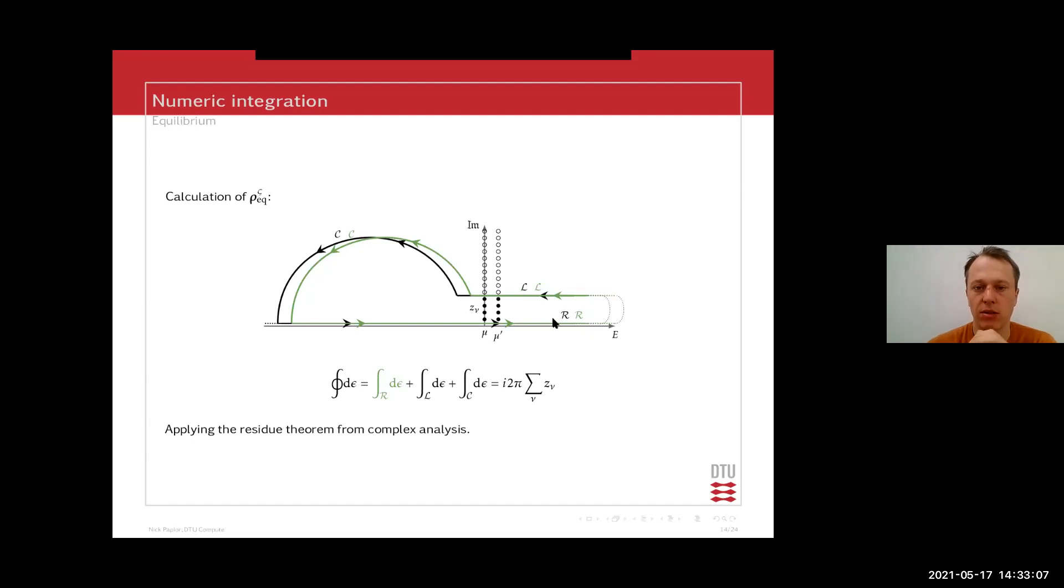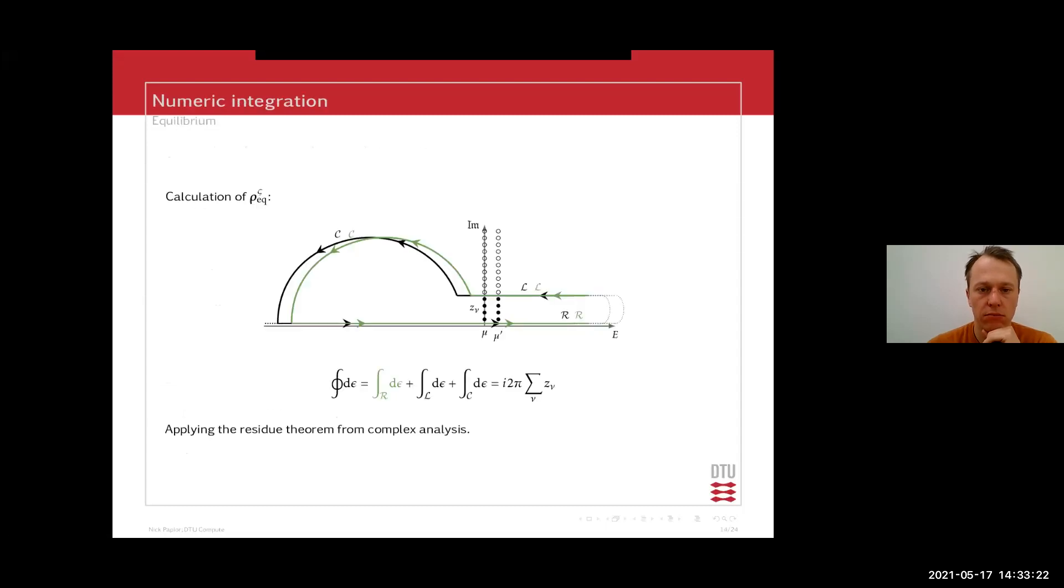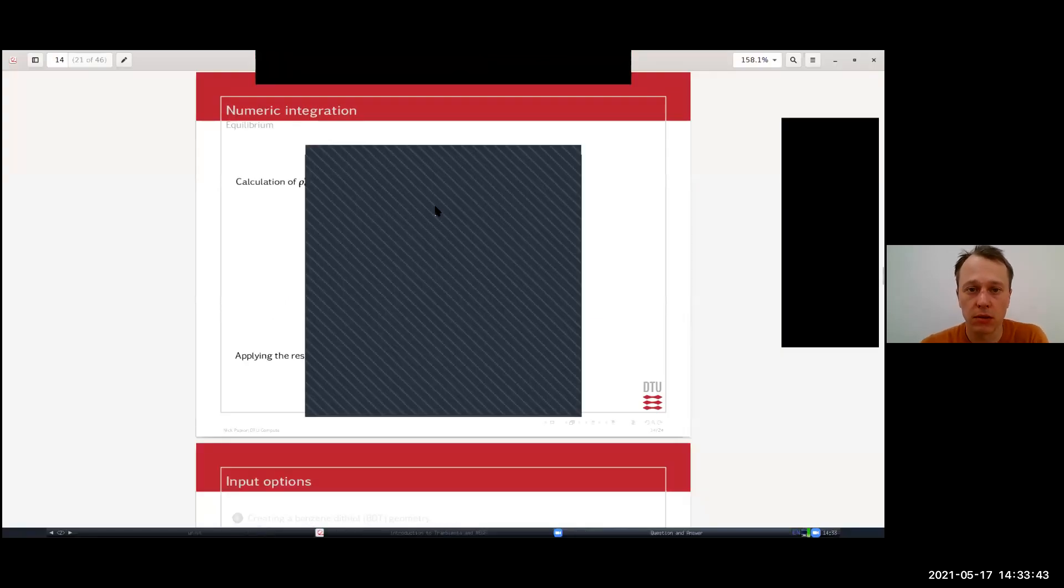So if you have two chemical potentials, you have to have two different contours and they are just shifted according to your chemical potentials along the energy axis, but the same principle holds. And I think that's 15 minutes. I think we will take five minutes. Maybe you can have a look at the questions before.